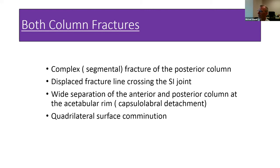You can potentially achieve secondary surgical congruence without the extended iliofemoral, so you may want to weigh the risks and benefits. Wide separation of the anterior and posterior columns at the acetabular rim or quadrilateral surface is a key indication, because through a single anterior or posterior approach you cannot control the contralateral column—you're relying on soft tissue attachments or the quadrilateral surface itself. A wide displacement visible on CT at the weight-bearing surface means soft tissue cannot secondarily pull the opposite column into position.